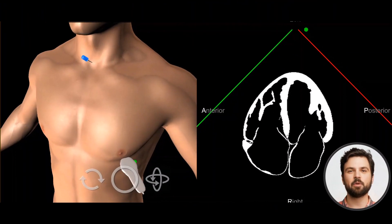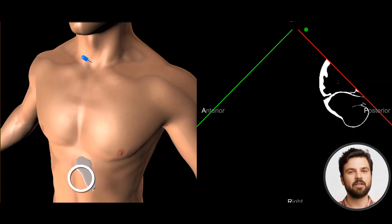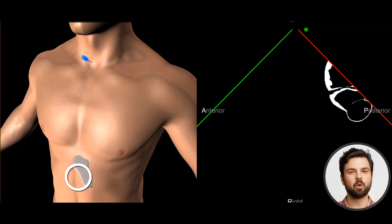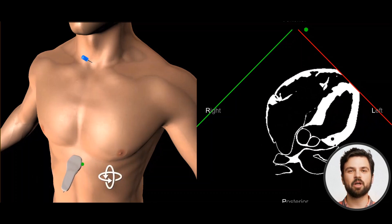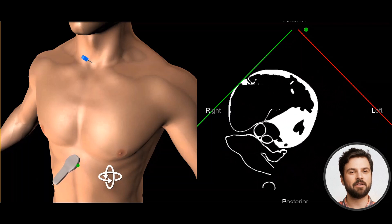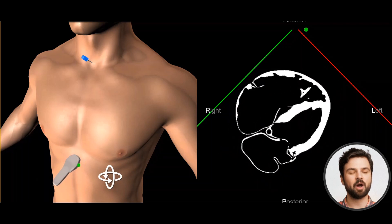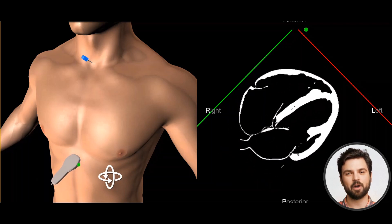We next obtain the subcostal four-chamber view. Place the probe horizontally under the xiphoid process, with the probe angled cephalad. The transducer orientation marker should face the patient's left flank. All four cardiac chambers are seen, with the liver at the top of the display.